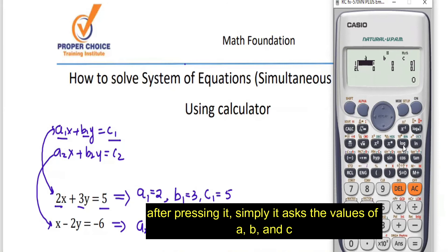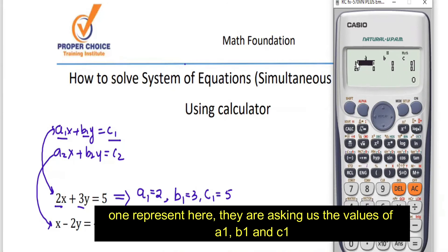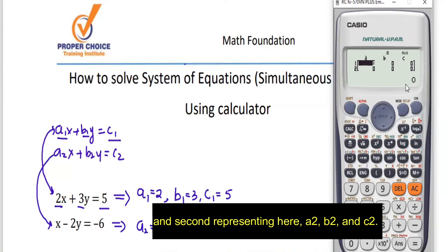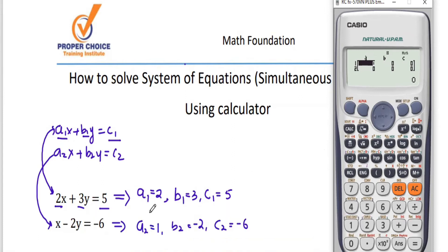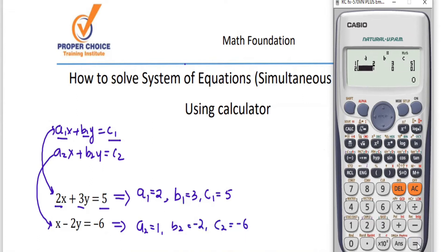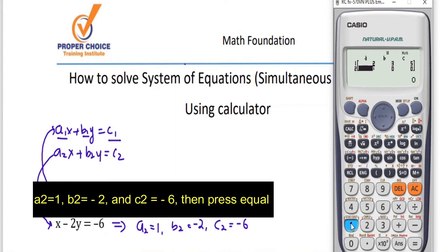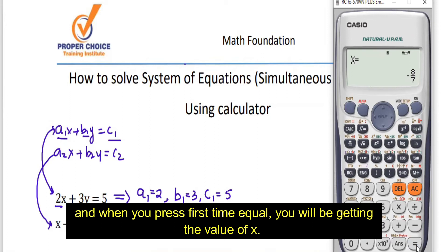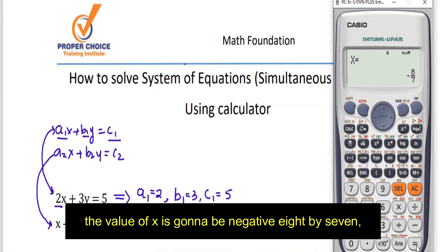After pressing button 1, the calculator asks for the values of A, B, and C. The first set represents A1, B1, C1 and the second represents A2, B2, C2. Enter A1 = 2, press Equal. Enter B1 = 3, press Equal. Enter C1 = 5, press Equal. Then enter A2 = 1, B2 = −2, C2 = −6, pressing Equal after each. When you press Equal after C2, you will get the value of X, which is −8/7.